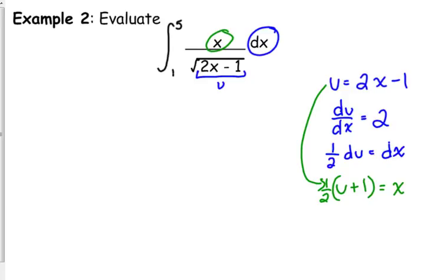And, I've got to substitute for my limits. So, my new lower limit, I plug in 1 into my u. So, 2 times 1 minus 1. 2 times 1 is 2. Minus 1 is 1. My new lower limit is 1. So, it's actually the same. That happens sometimes. My new upper limit, 2 times 5 minus 1. 10 minus 1 is 9. Sometimes they won't change. Most of the time they do, but every once in a while they don't.